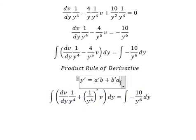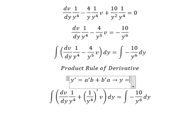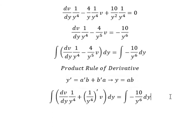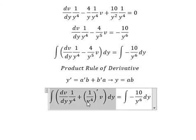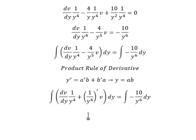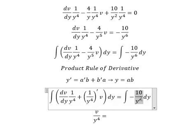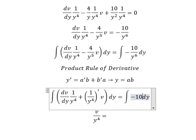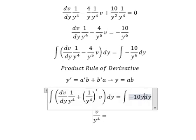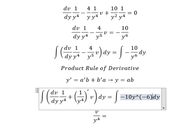So the integration of this side gives us y equals b. The integration gives us v over y to the power of 4. For the right side, I will put 10 y to the power of negative 6.